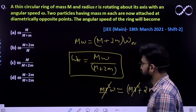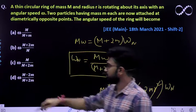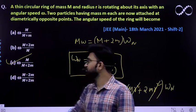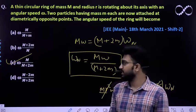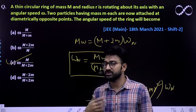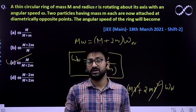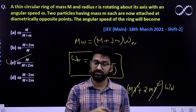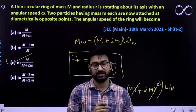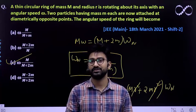We will see which option - M omega divided by capital M plus 2m - so option C would be correct. You have to conserve the angular momentum, then put the expression of moment of inertia at the two different conditions and you will get the answer. I hope this question is clear to everyone, thank you.